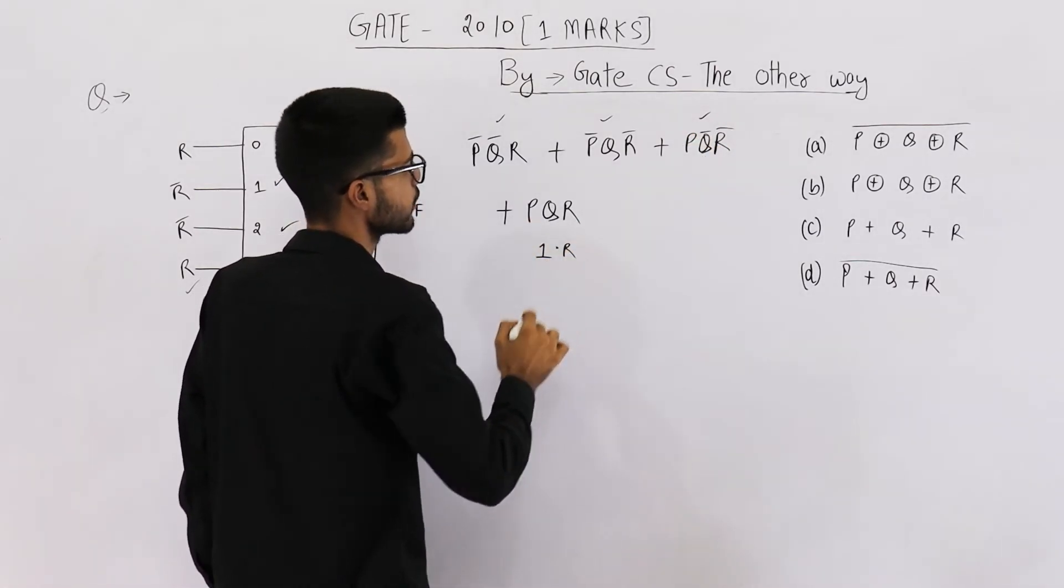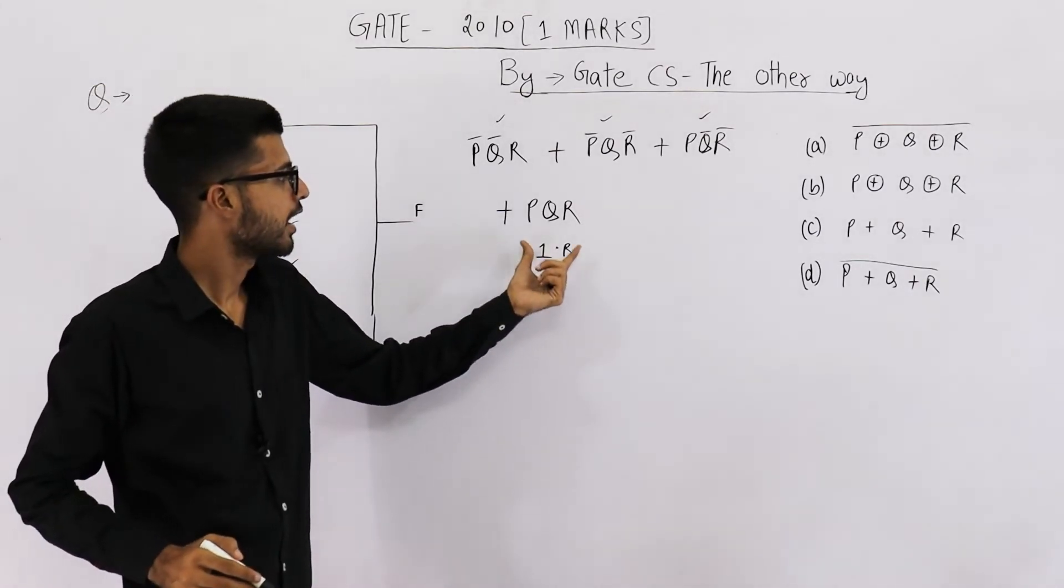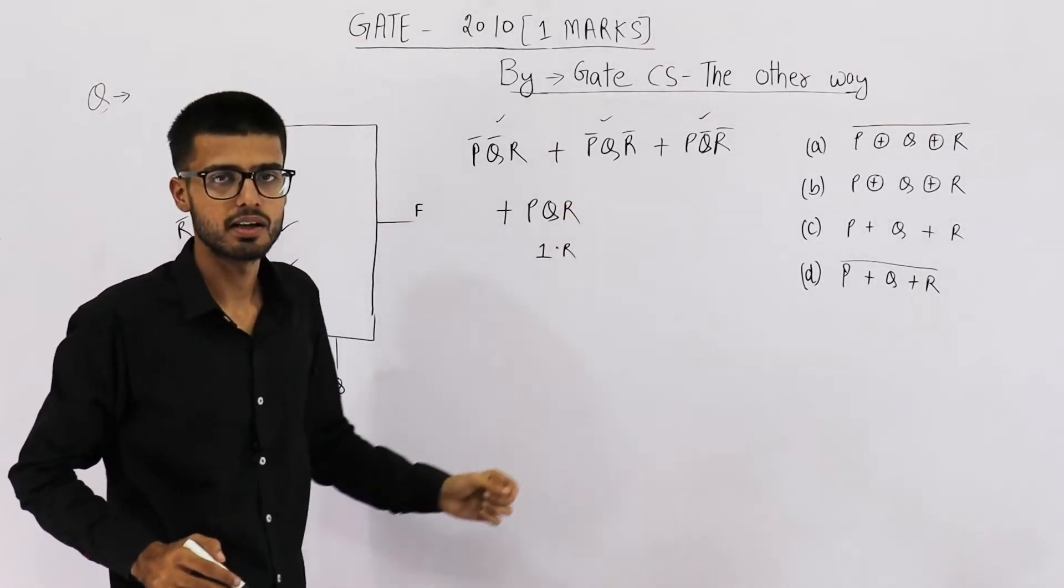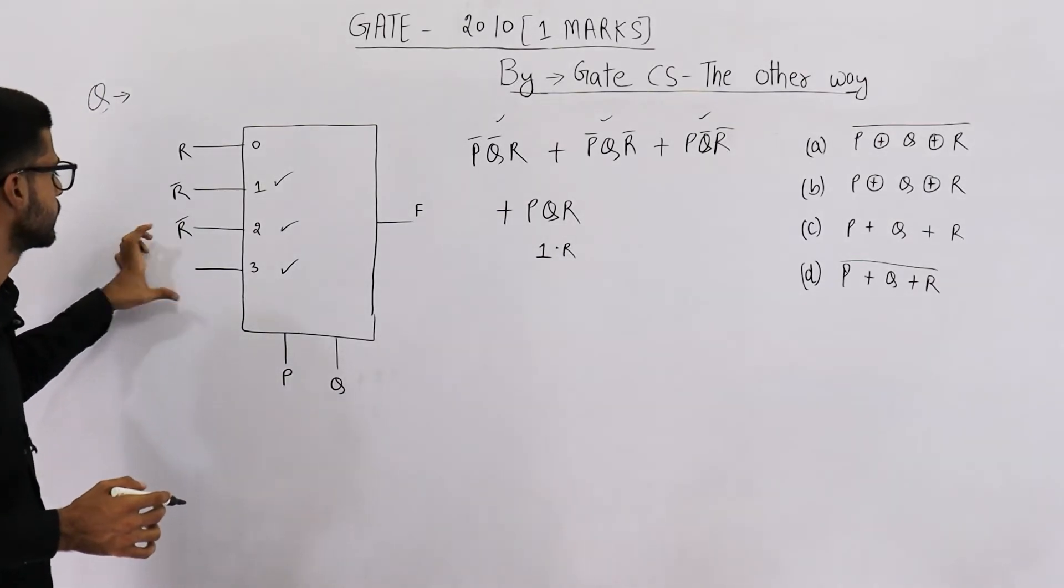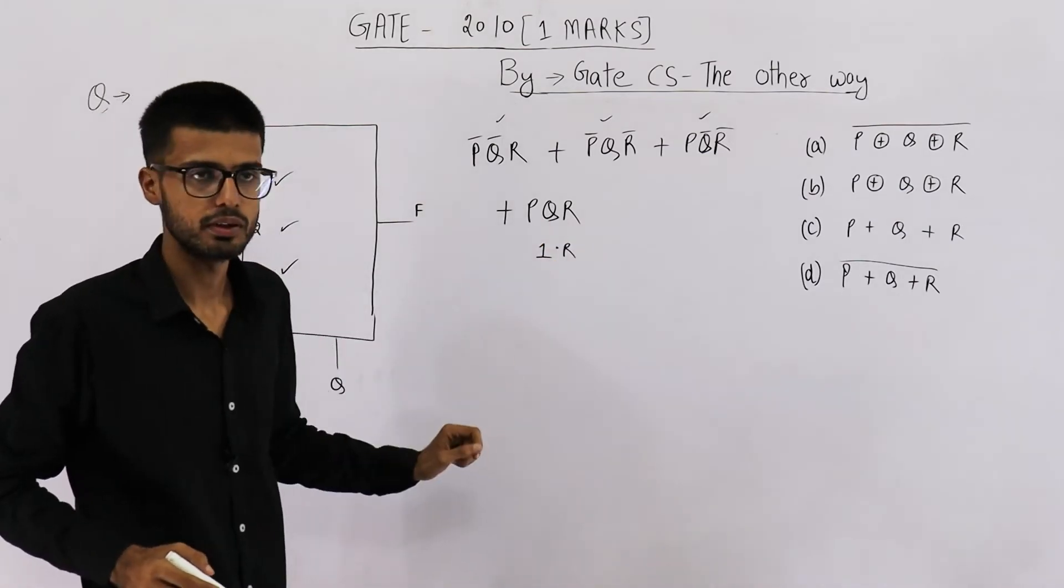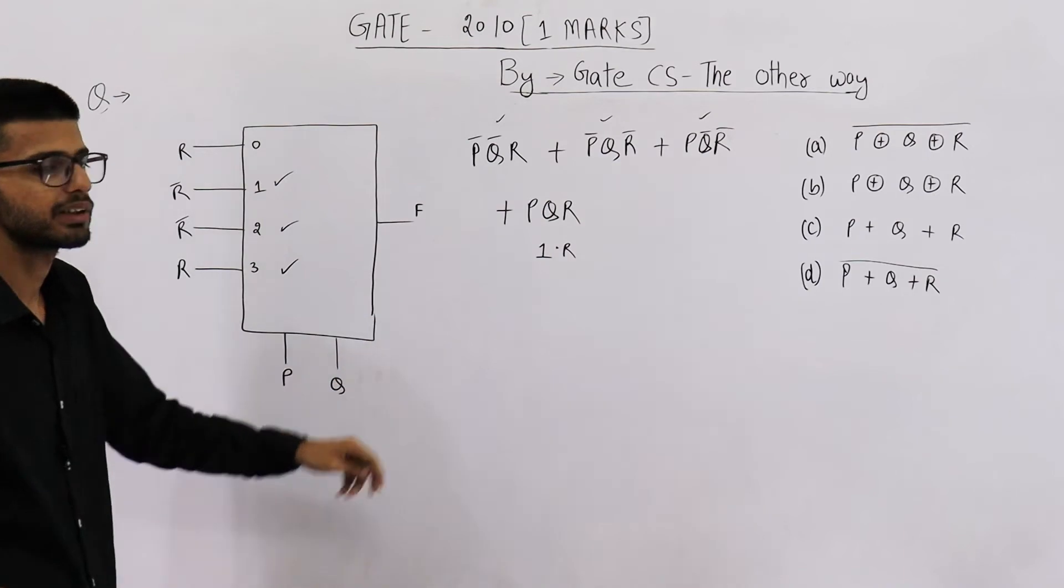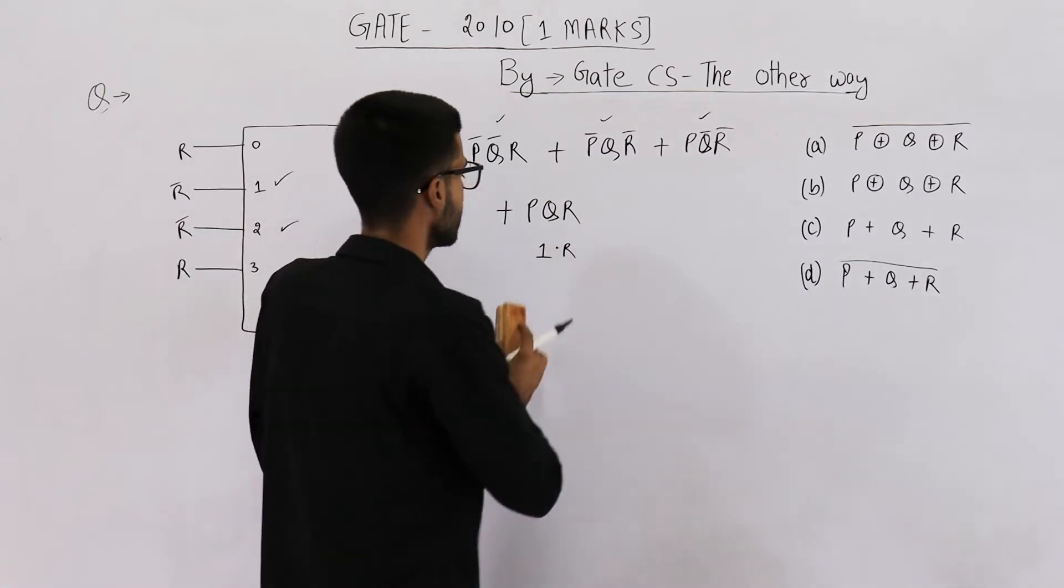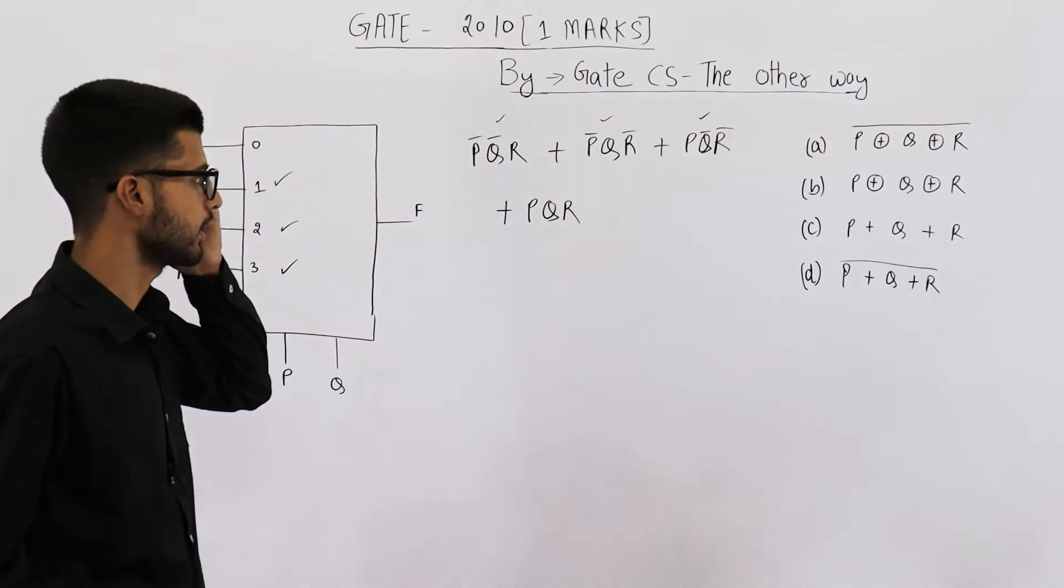This is one dot r. So that's the reason I'm writing pq dot r. See, if the output that I wanted is one, so I will write pq dot one only. But in this case I wanted the output to be r, so I'm writing pq dot r. Anyways, this is the equation that we get. Let's see which of the following options match.